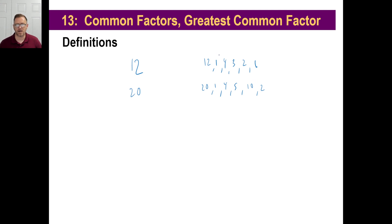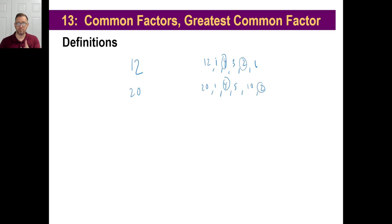So you could look at this and go, what common factors do they have? Well, they have 2s together, and they have 4s together, and 1. But the greatest common factor we would say in this would be 4. That's the biggest factor that goes into both of those numbers. That's what greatest common factor is. That's called GCF sometimes because of the initials.